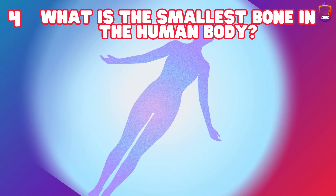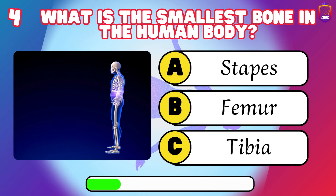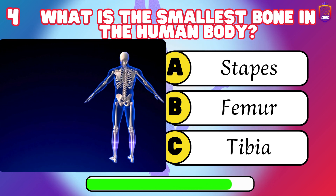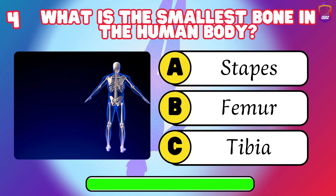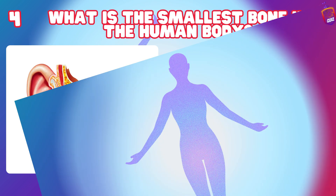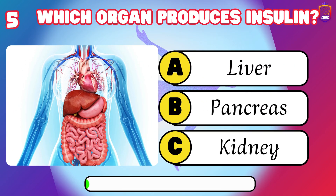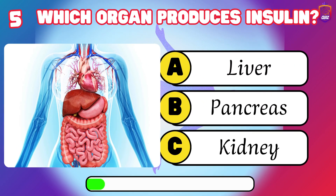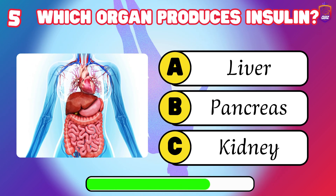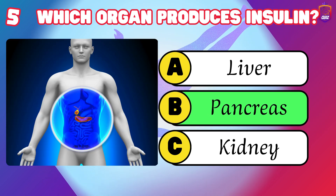What is the smallest bone in the human body? Stapes. Which organ produces insulin? Pancreas.